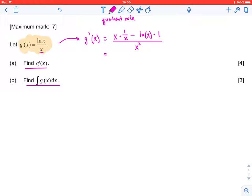We have some simplification. x times 1/x is just 1 minus ln(x), and all of that is divided by x squared.